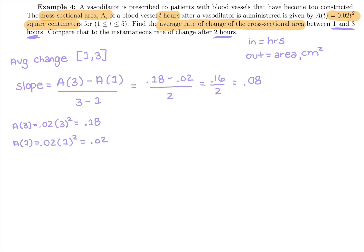And remember, a rate of change needs two units. The units with the top, the 0.18, the 0.02 are in centimeters squared. And the bottom, that three and one are in hours, output over input.